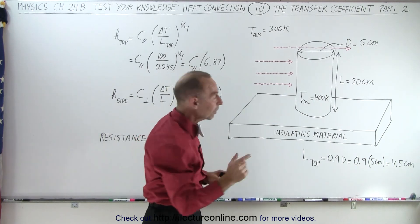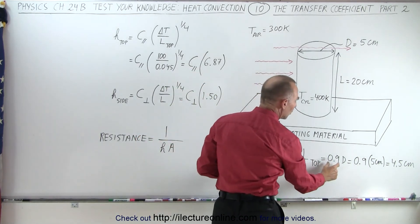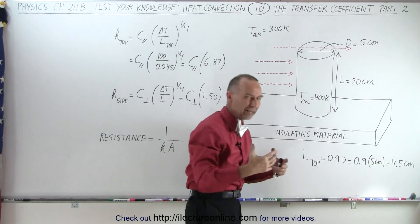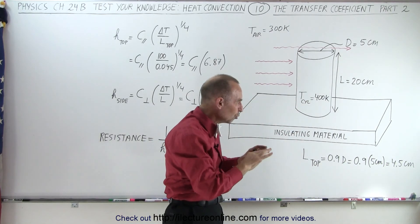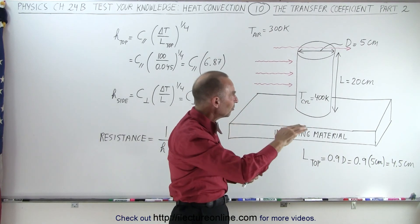Notice that we have an equivalent length at the top, which is 0.9 times the diameter. This is kind of a method that we typically use to approximate a distance that the airflow travels across a circular surface instead of a rectangular surface.